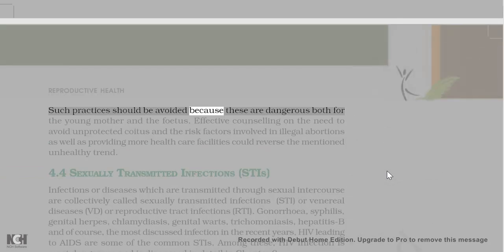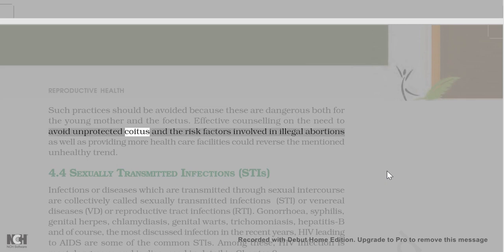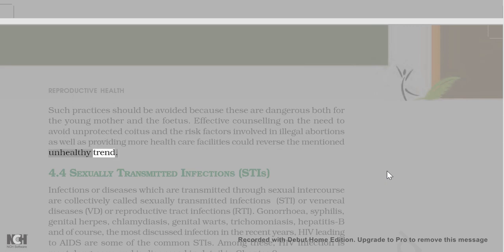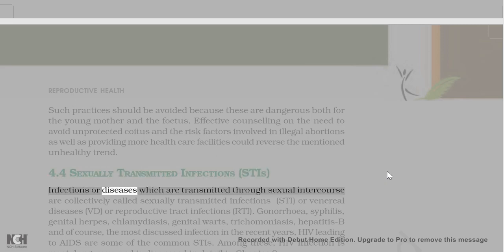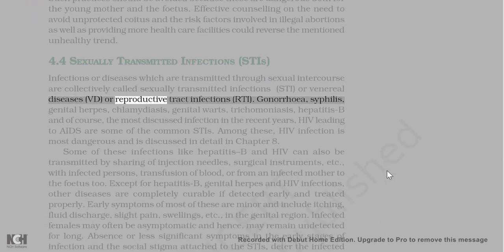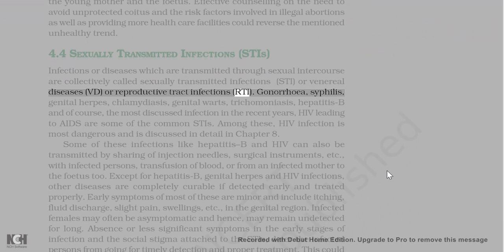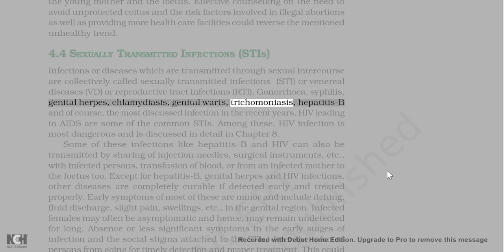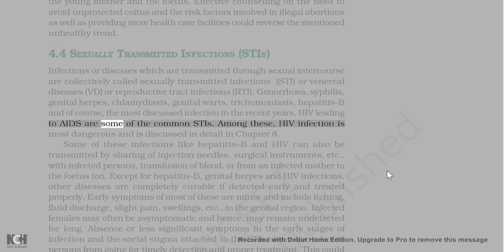Such practices should be avoided as they are dangerous for both the young mother and the foetus. Effective counseling on the need to avoid unprotected coitus and the risks of illegal abortions, along with more health care facilities, could reverse these unhealthy trends. Infections or diseases transmitted through sexual intercourse are collectively called sexually transmitted infections (STIs), venereal diseases (VD), or reproductive tract infections (RTI). Gonorrhoea, syphilis, genital herpes, chlamydia, genital warts, trichomoniasis, hepatitis B, and HIV leading to AIDS are some common STIs.